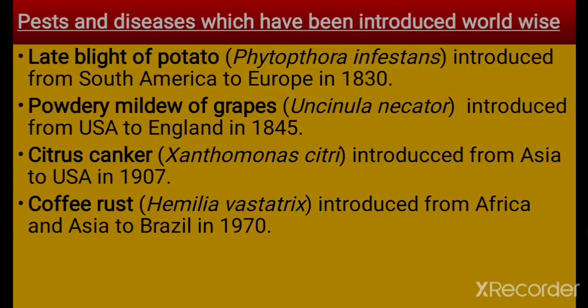Citrus canker, caused by Xanthomonas citri, was introduced from Asia to USA in 1907. Then coffee rust, which is caused by Hemileia vastatrix, was introduced from Africa and Asia to Brazil in 1970. These are examples of major plant diseases introduced across the world.